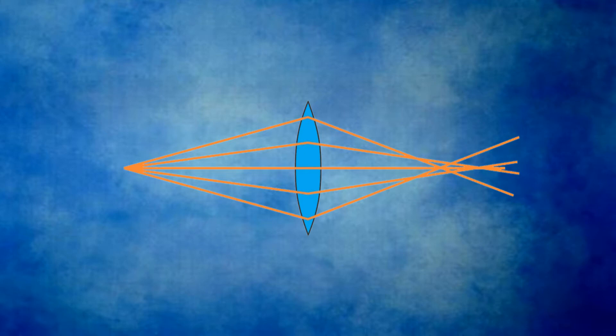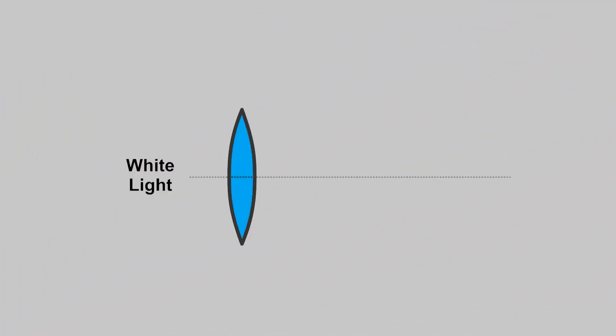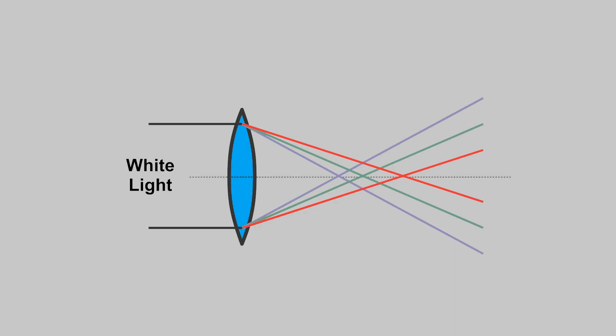The material's index of refraction changes with the wavelength of light. This change in index of refraction is called dispersion. The glass used in making lenses also has dispersion, meaning the focal length of a lens changes with wavelength. Different wavelengths do not focus at the same distance with the same magnification. The difference in focus distance is called longitudinal chromatic aberration.